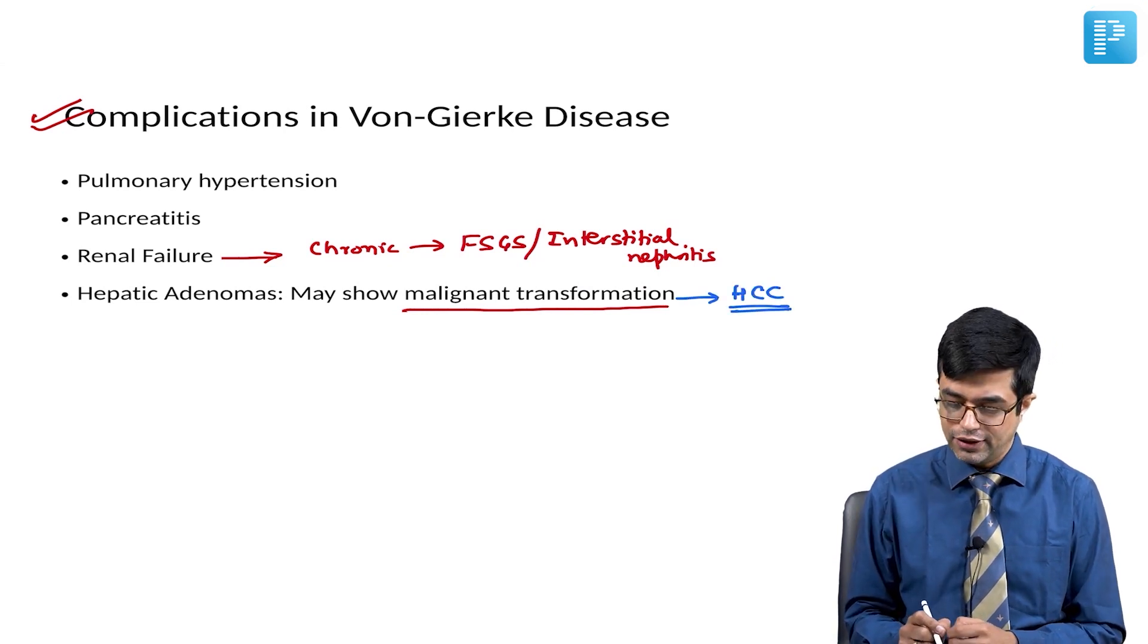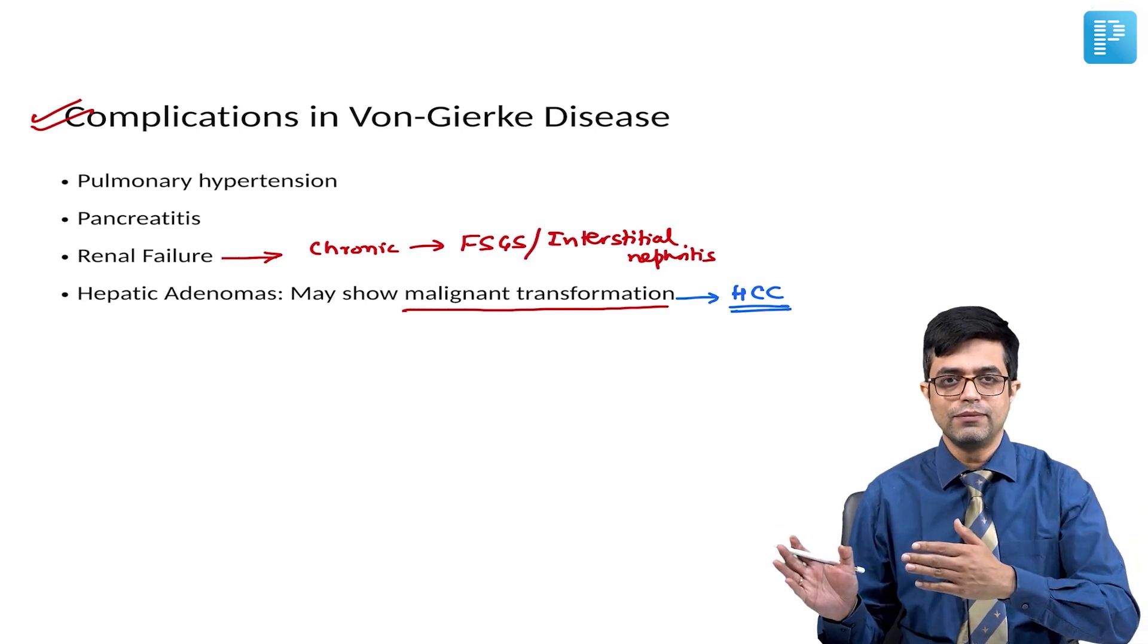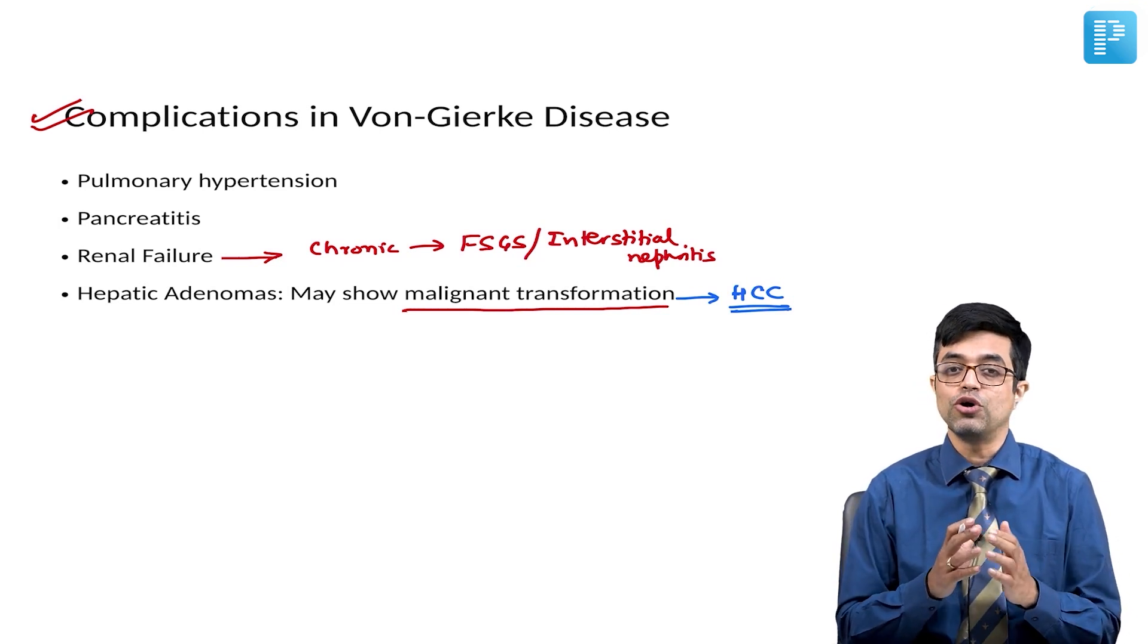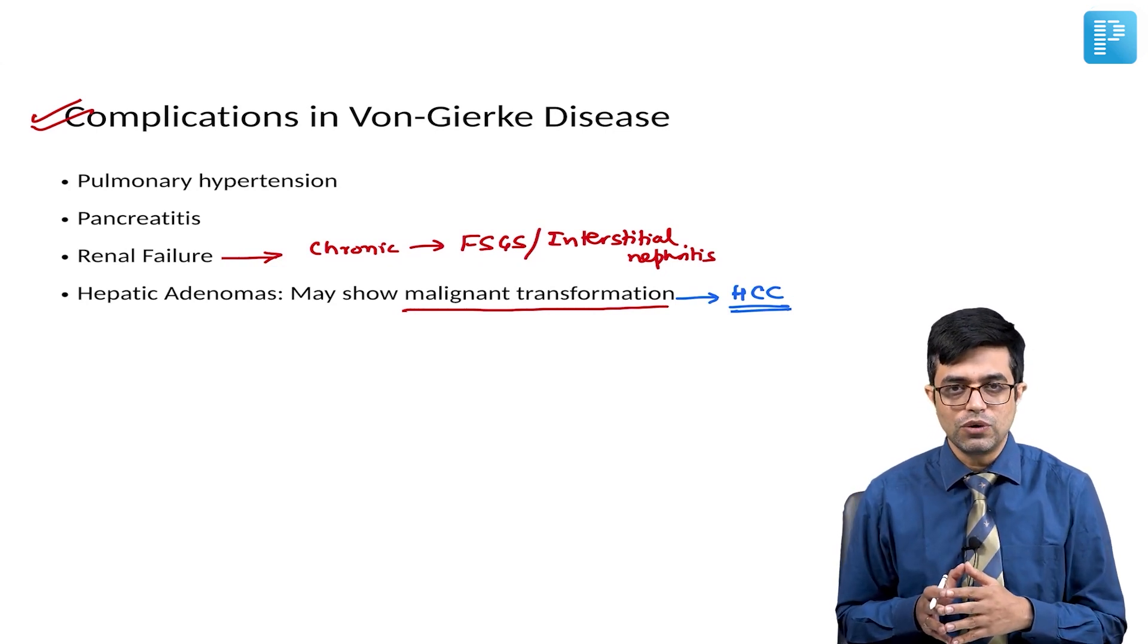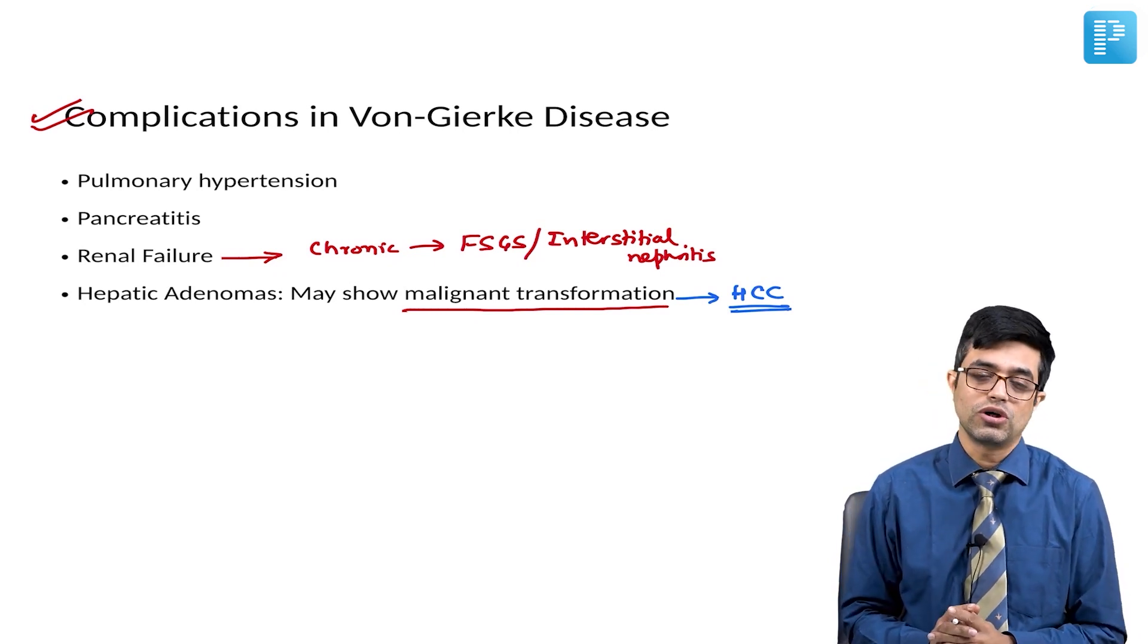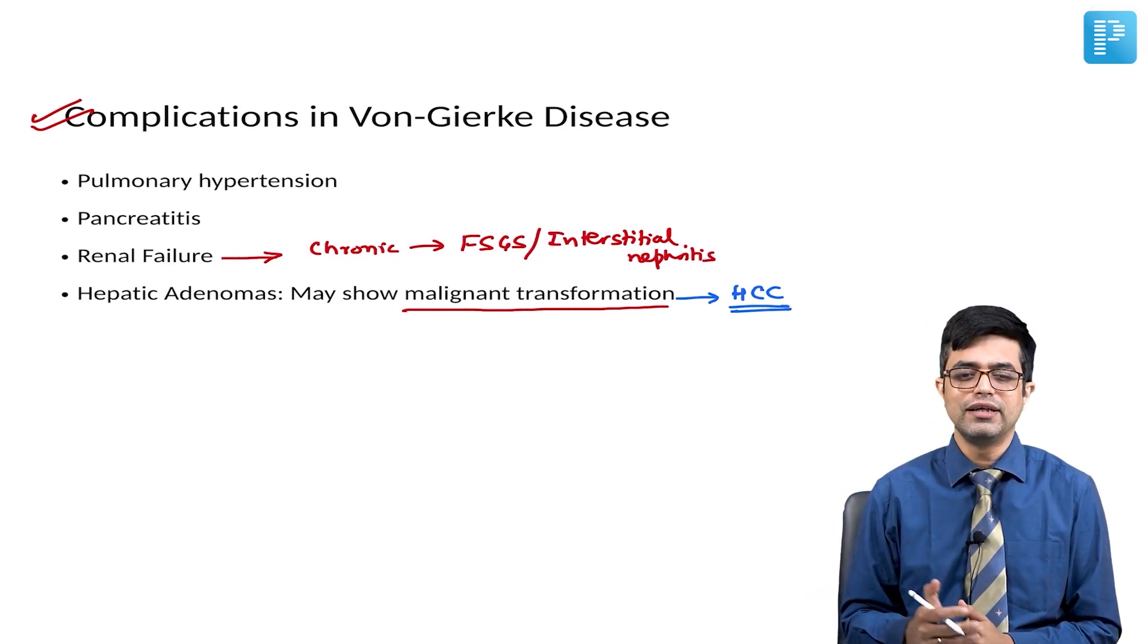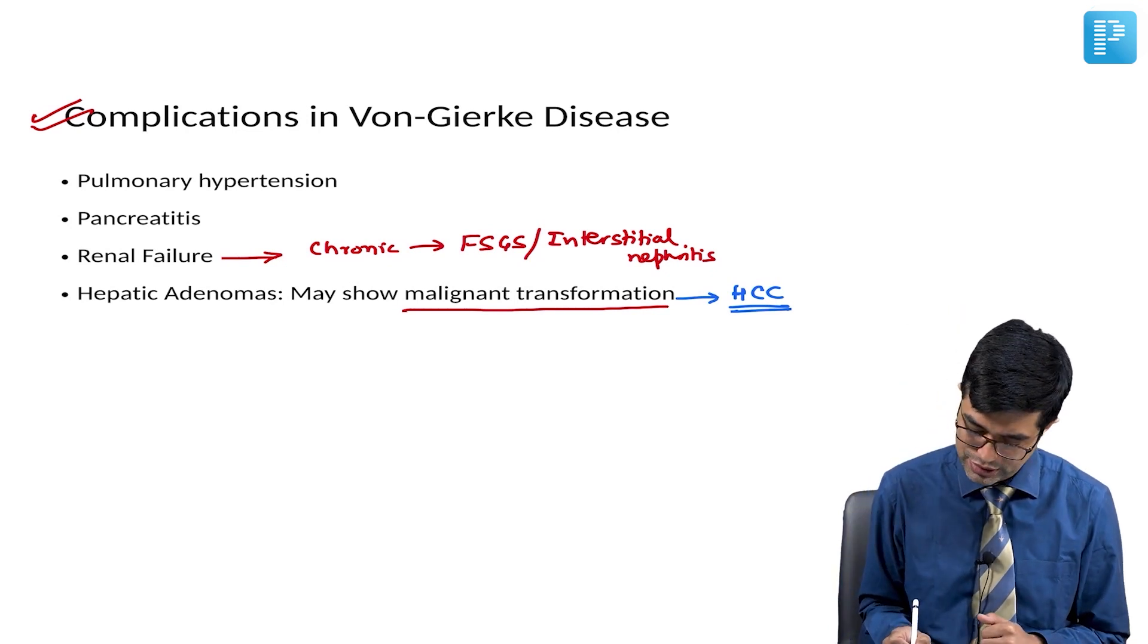The problematic thing is, normally you have a patient of adenoma turning into HCC. You have elevation in alpha-fetoprotein and sometimes carcinoembryonic antigens. Here in Von-Gierke disease, it is found due to unexplained reasons, this elevation in tumor markers is not seen. So, the follow-up is a problem and long-term mortality, morbidity in adulthood is also related to the malignant transformation.